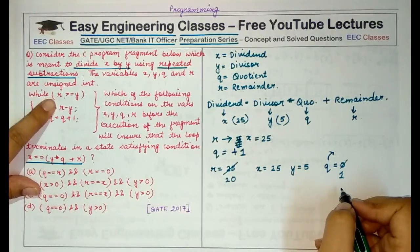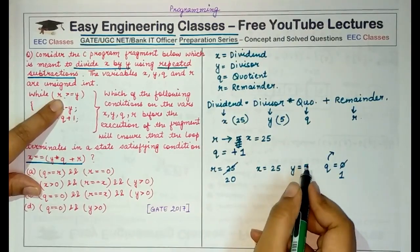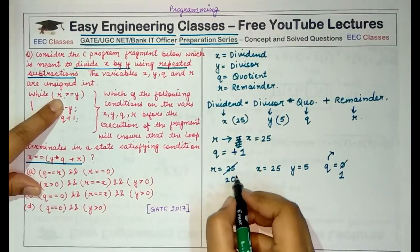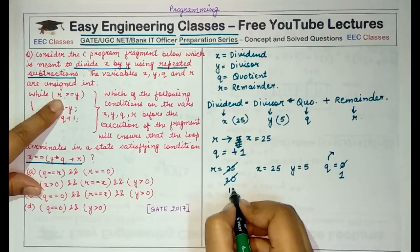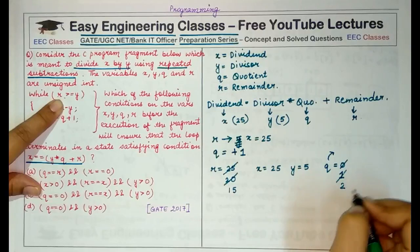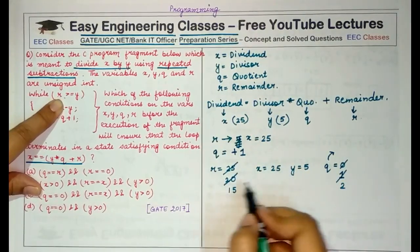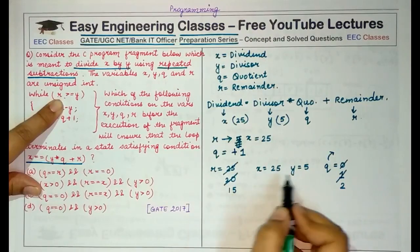Now I again go into the loop, R is still greater than 5, so I decrement this value of R by 5, it becomes 15 and the value of Q is incrementing, so if you try to relate the number of times I am decrementing R by Y, I am incrementing the value of Q.